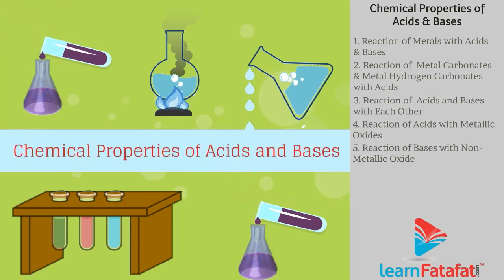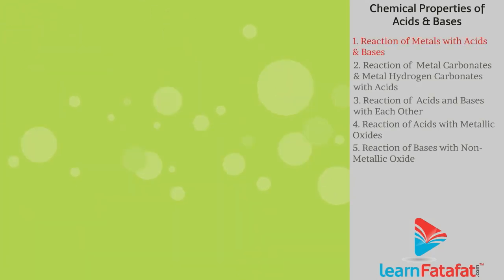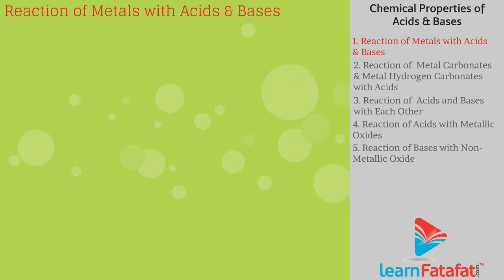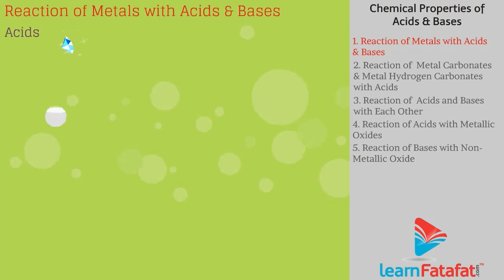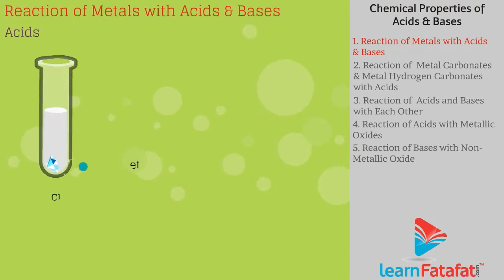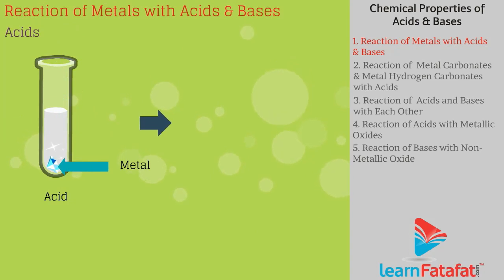Chemical properties of acids and bases: reaction of metals with acids and bases. Metals displace the hydrogen from acids and bases and combine with the remaining part to form a salt.